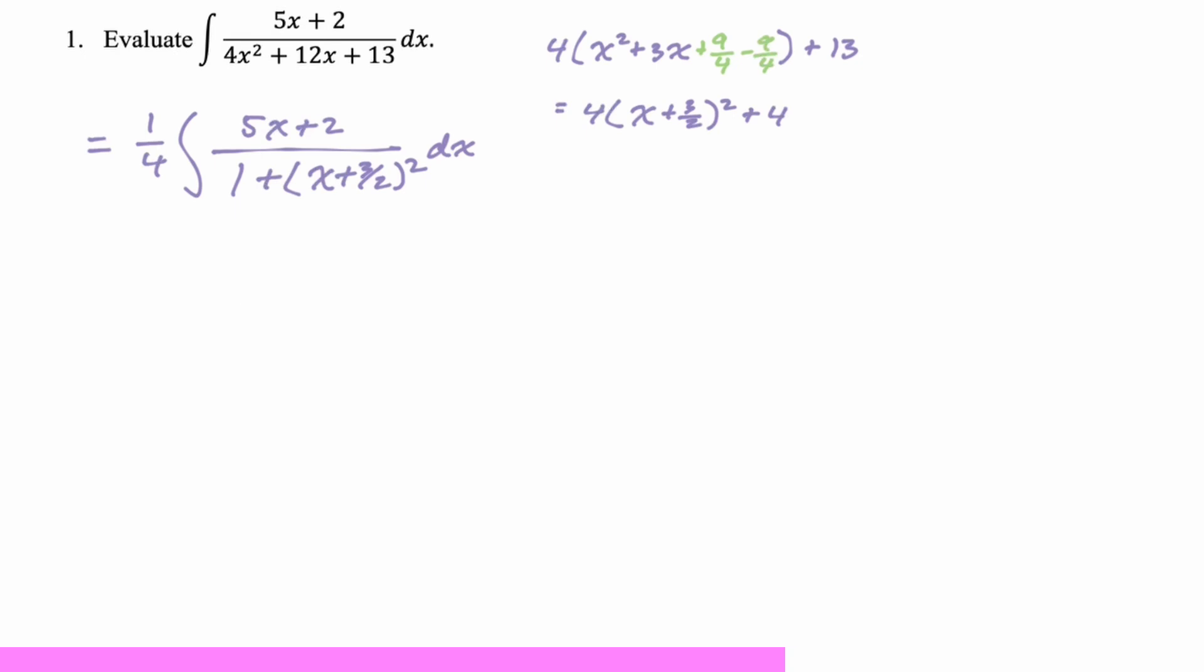Now what I'm going to do is I'm going to do a u substitution. I'm going to say u is x plus 3 halves. So when in doubt, when you're working toward arctan, if you're not sure what to do, let u equal u, basically, right? 1 over 1 plus u squared. Let u equal the thing that you're squaring. And you can usually work out a substitution, and the problem usually kind of drops out. If u is equal to x plus 3 halves, then x is going to be u minus 3 halves, and then dx will just be du.